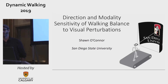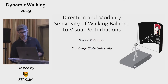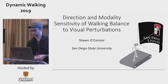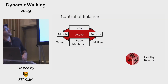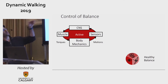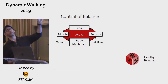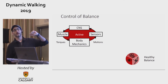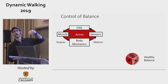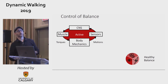I'm glad to be back at Dynamic Walking after too long of a hiatus. I'll be talking today about studies in human balance control. A typical control diagram that we often see in a textbook looks something like this, where body motions are sensed by body sensors to inform the central nervous system about how to provide corrective torques to stabilize motion.